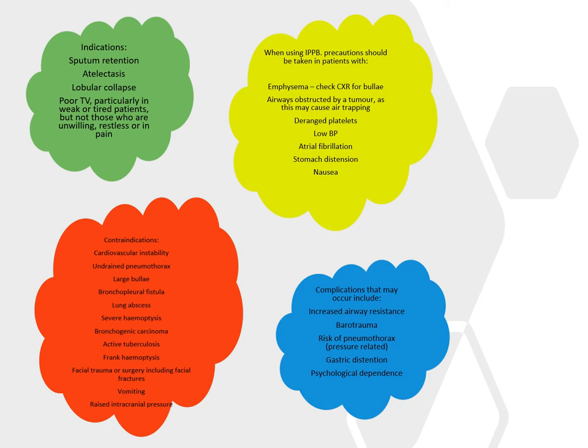Apart from absolute contraindications, there are things we need to be cautious of and weigh up the risk versus benefit. Large emphysematous bullae — just because a patient is labelled as emphysema doesn't mean they have emphysematous bullae, so it's worth checking the latest chest X-ray or CT. Also consider airways, tumour, deranged platelets, low blood pressure — again the risk of cardiovascular destabilisation — and AF, which fits into that category. Stomach distension carries a risk of swallowing air and making it worse.